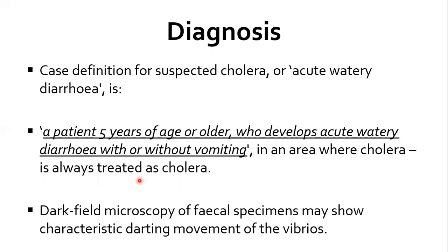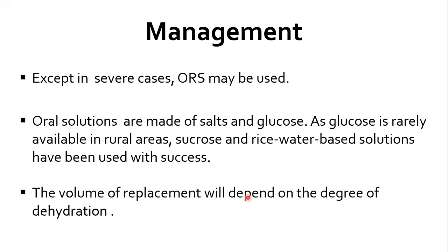In terms of diagnosis, the classical method uses the case definition based on signs and symptoms. The case definition of cholera is acute watery diarrhea in a patient five years of age or older who develops acute watery diarrhea with or without vomiting. Other than this case definition, laboratory diagnostic methods can be used, such as dark field microscopy to actually identify Vibrio cholerae.